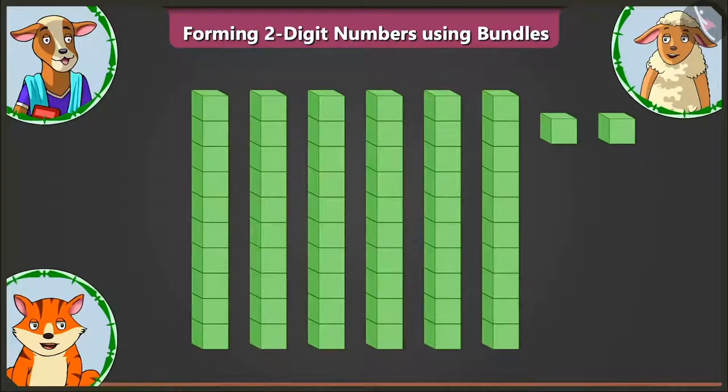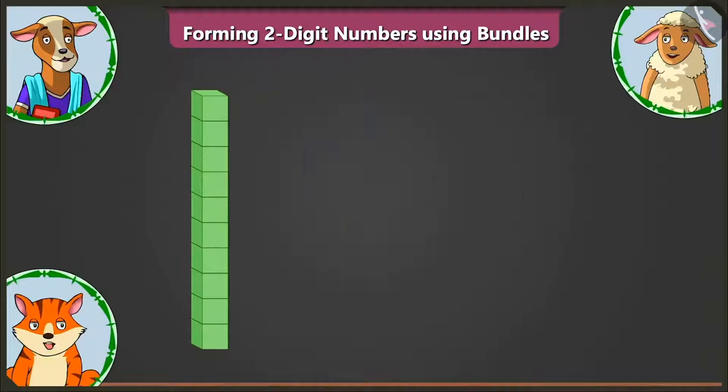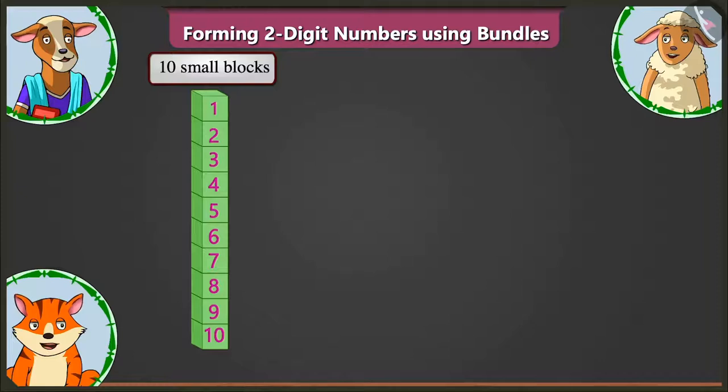Here, in the first big block, there are one, two, three, four, five, six, seven, eight, nine and ten small blocks. Means, there is one tens.